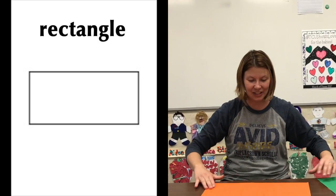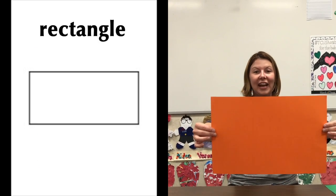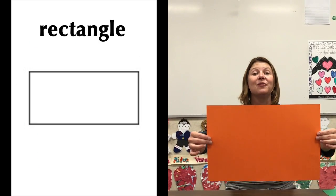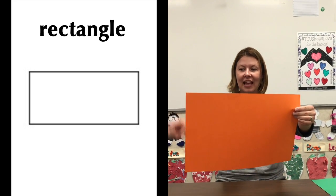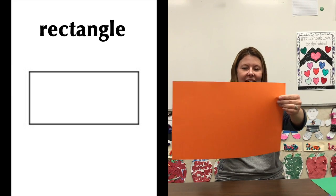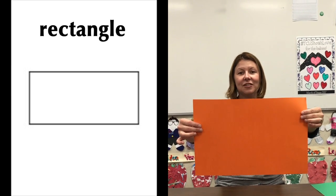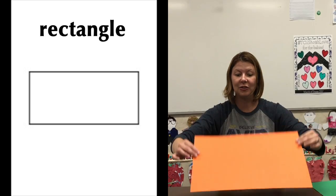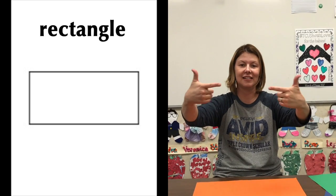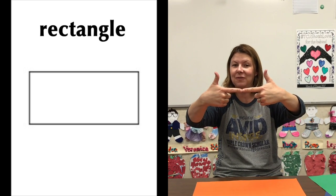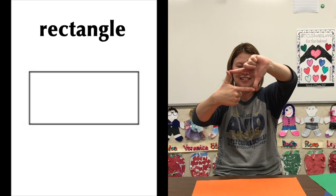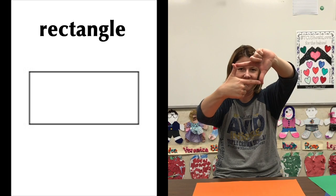Our next flat shape is a rectangle. Let's say rectangle. Rectangles have two long sides and two short sides. Rectangles are flat. You can make a rectangle with your hands. Point your fingers together like that, and then one of them gets flipped upside down. Here is your rectangle with the camera.